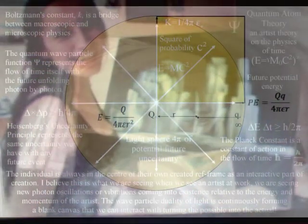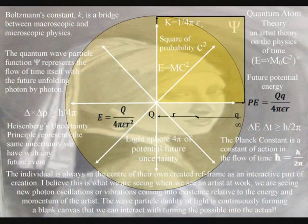Therefore, quantum uncertainty, known as Heisenberg's uncertainty principle, is the same uncertainty we have with any future event, and is relative to the energy and momentum of our own actions.